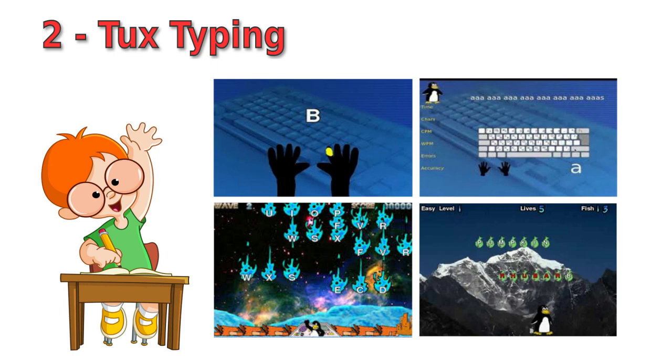The program works by having words falling from the sky, and the player has to type them before they disappear. The level of difficulty increases from typing letters of the alphabet to encoding whole words. The speed at which words fall will also increase as the player progresses.